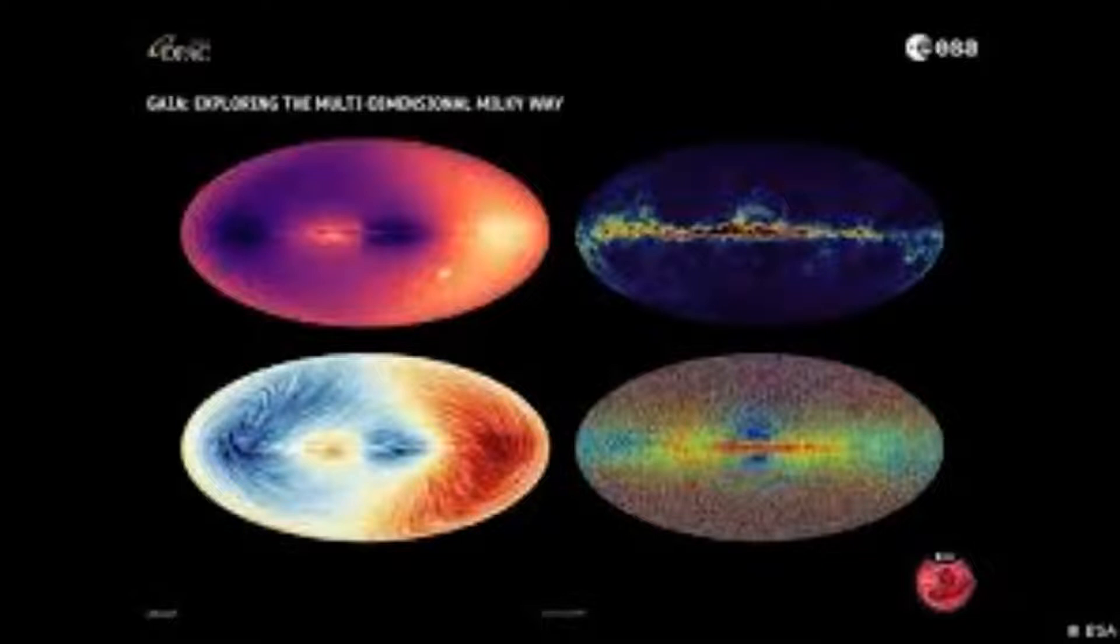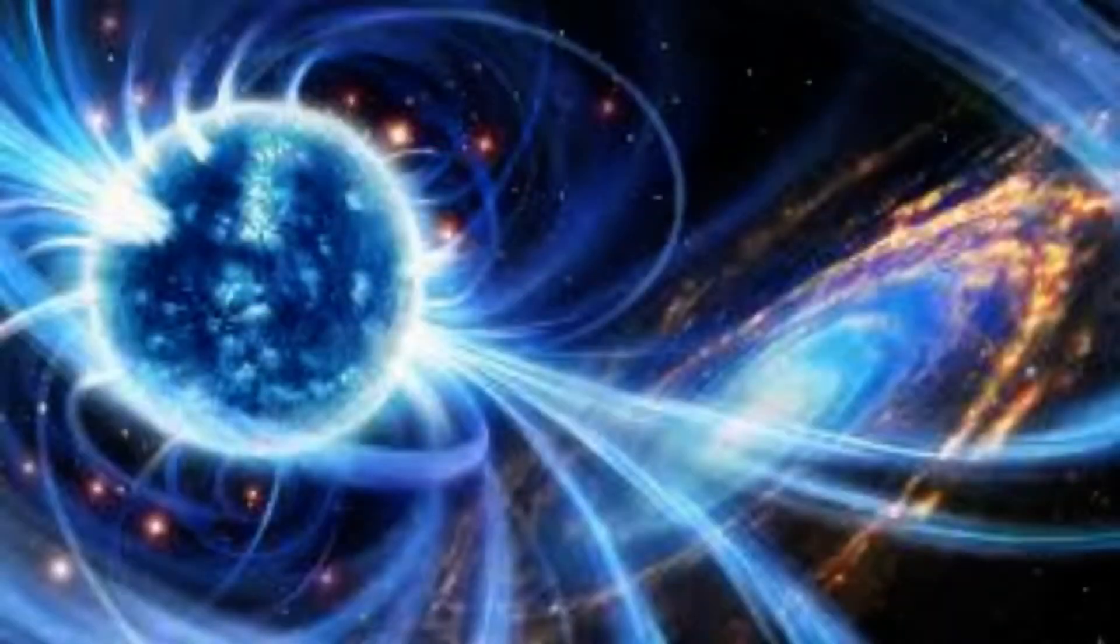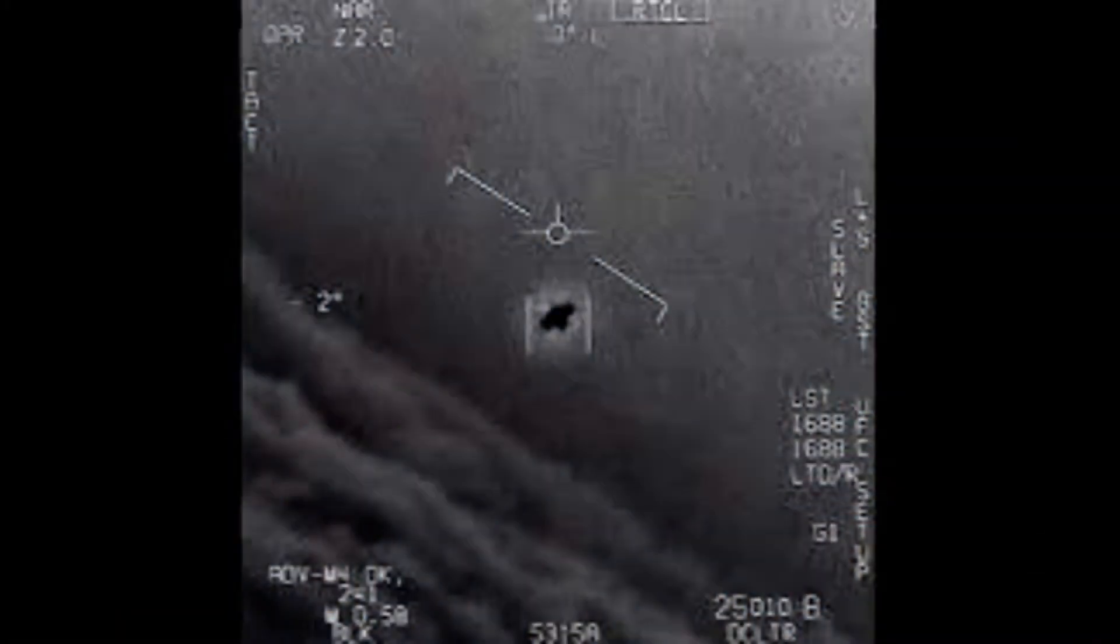Fast radio bursts, described as brief and mysterious beacons, have been spotted in various and distant parts of the universe, as well as in our own galaxy. Their origins are unknown, and their appearance is unpredictable.